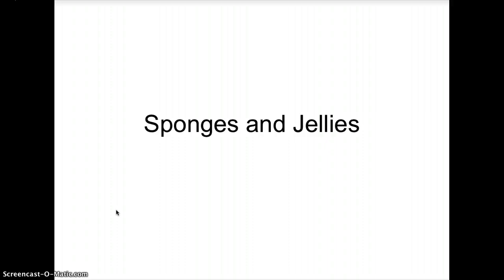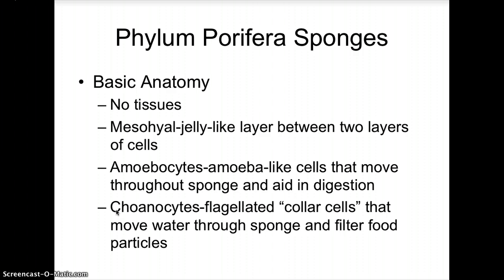Welcome to marine biology lecture on our first invertebrate groups: sponges and jellies. Our first group is phylum Porifera, which are the sponges. Basic anatomy: sponges are the one and only group of animals that have no true tissues — they are simply composed of cells.